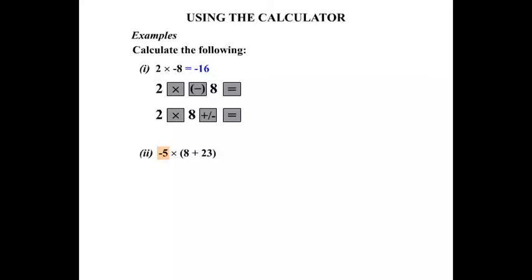So we'll start with the negative 5. Alright, the negative, then the 5. Then we've got multiply. Then we have brackets. So you'll need to look at your calculator for the brackets. There's a left bracket, so we type that in.